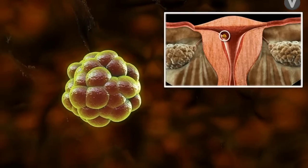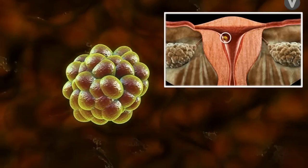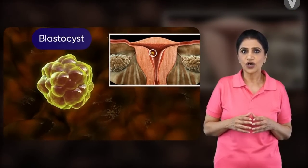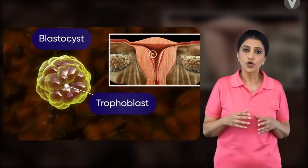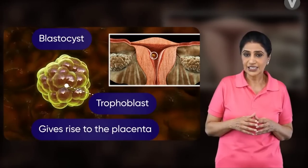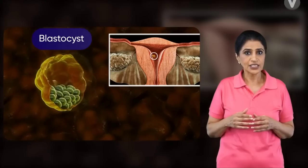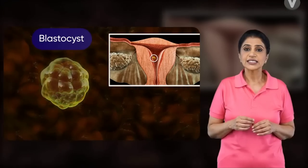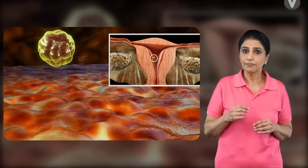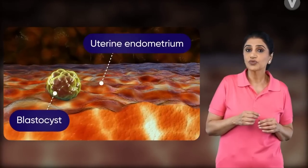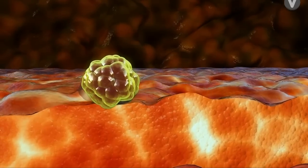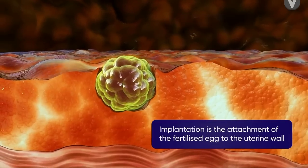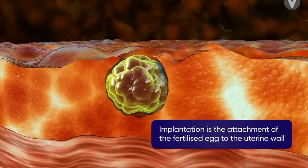Further cell division leads to the formation of a bigger mass of cells, or blastocyst, consisting of an outer layer of cells or trophoblast, which gives rise to the placenta, and an inner cell mass or embryoblast, destined to form the embryo. It is at this stage that the blastocyst attaches itself in the endometrium of the uterus. It gradually gets embedded into the endometrial wall. This process is known as implantation.